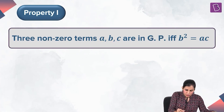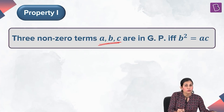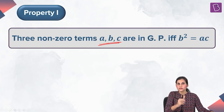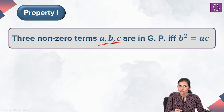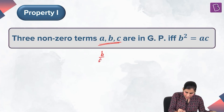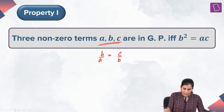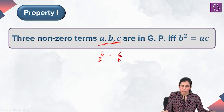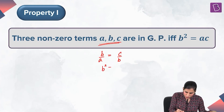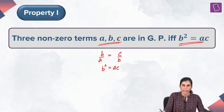Suppose A, B, C are three non-zero terms which are in GP. That would mean the ratio of the successive terms is equal to a constant — that means B upon A is equal to C upon B, equal to some non-zero constant. If B upon A equals C upon B, it gives me B squared equals AC, which is what I wanted.